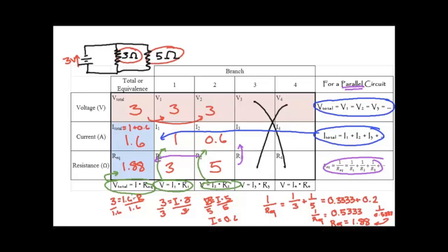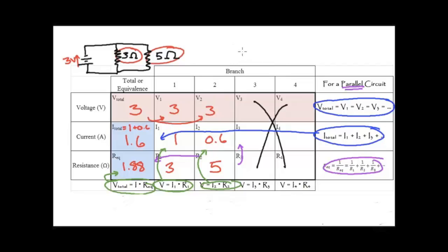And that gives me an R_EQ equal to 1.88. And so therefore it checks. Another name for circuit tables is RVIP tables, R-VIP tables, or you can call them VIPR tables. It really doesn't matter.